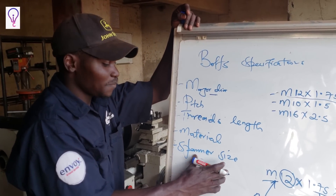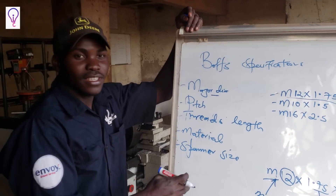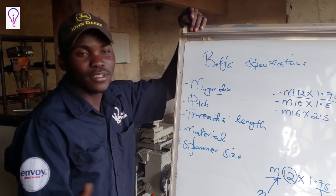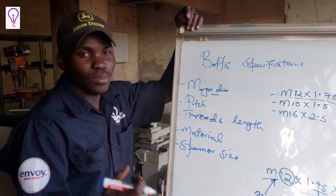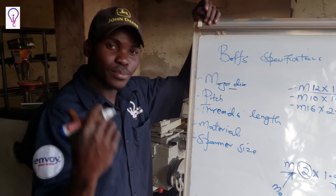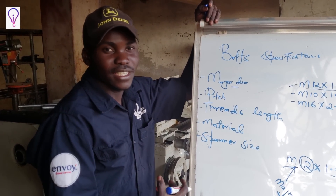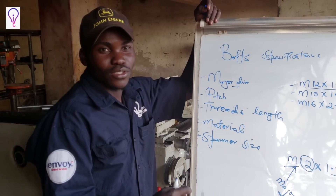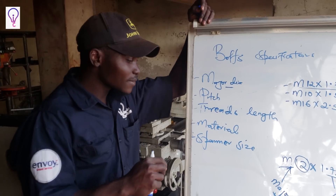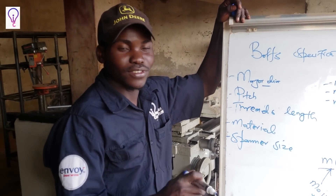The last specification is the spanner size. In fabrication work, someone may approach you and say 'I want spanner 19.' With experience, you'll know that an M12 bolt is spanner 19, and an M10 bolt is spanner 17. So the spanner size is also a specification.